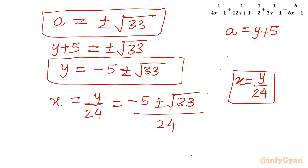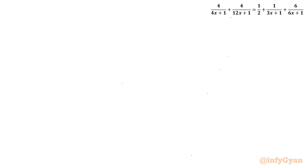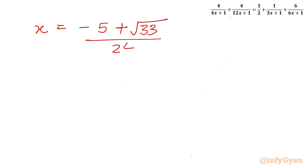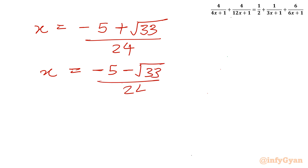Both solutions are real. So the two solutions of this rational equation are x = (−5 + √33)/24 and x = (−5 − √33)/24. Both solutions are accepted as they do not match any of the exempted values. I hope this video is meaningful to you. Don't forget to like, share, and subscribe. Bye-bye till the next video — good luck and take care of yourself!